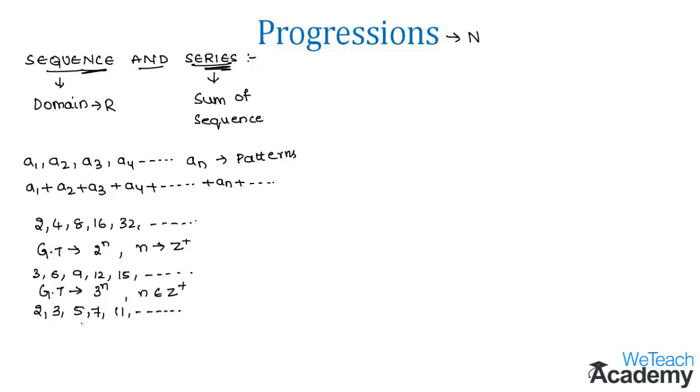Coming to the last example, here we have 2, 3, 5, 7, 11, and so on. We observe that this is a series of prime numbers. All these examples are called progressions as they follow certain patterns.